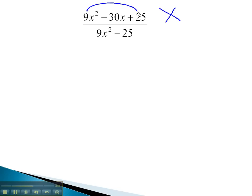Using the ac method, 9 times 25 is 225. We also want to add to negative 30. After some practice, we find this will be negative 15 and negative 15. Notice those two numbers match. When they match, we know it's one of our special factoring shortcuts. It's going to be something squared. Taking the square root of the 9x squared to get 3x, the square root of the 25 to get 5, and the sign from the middle will complete factoring the numerator.